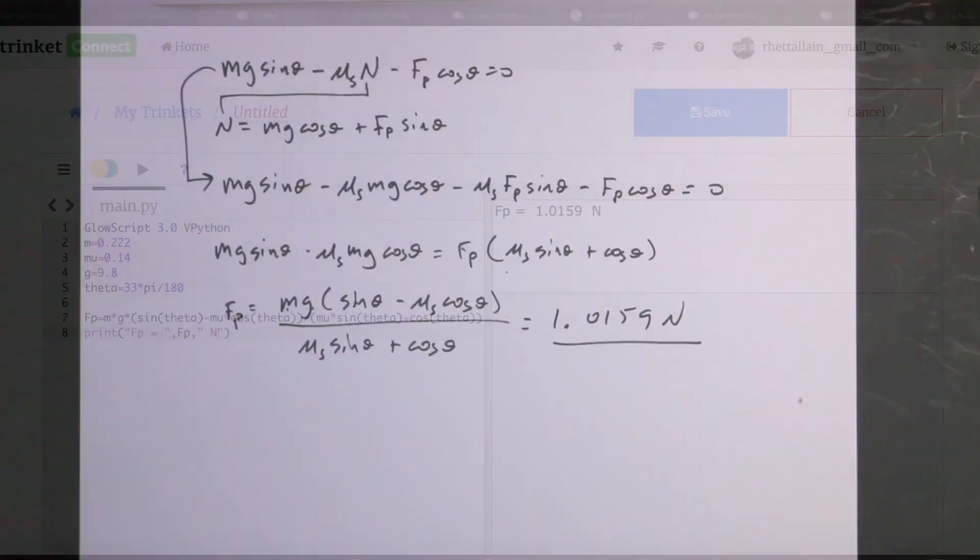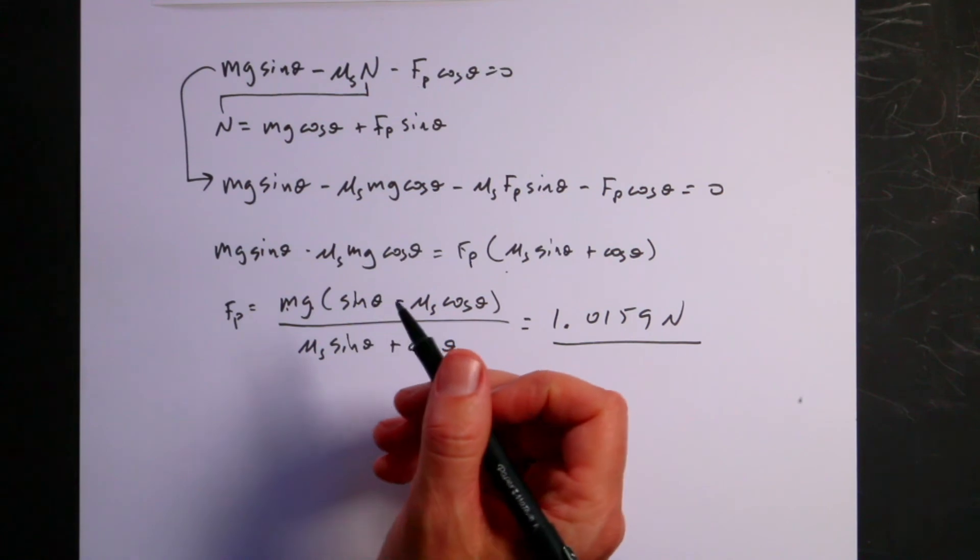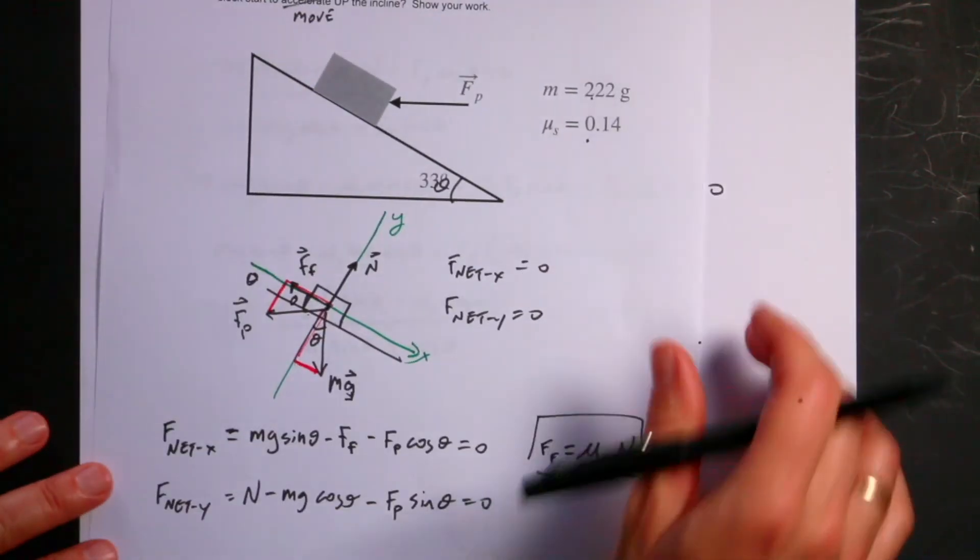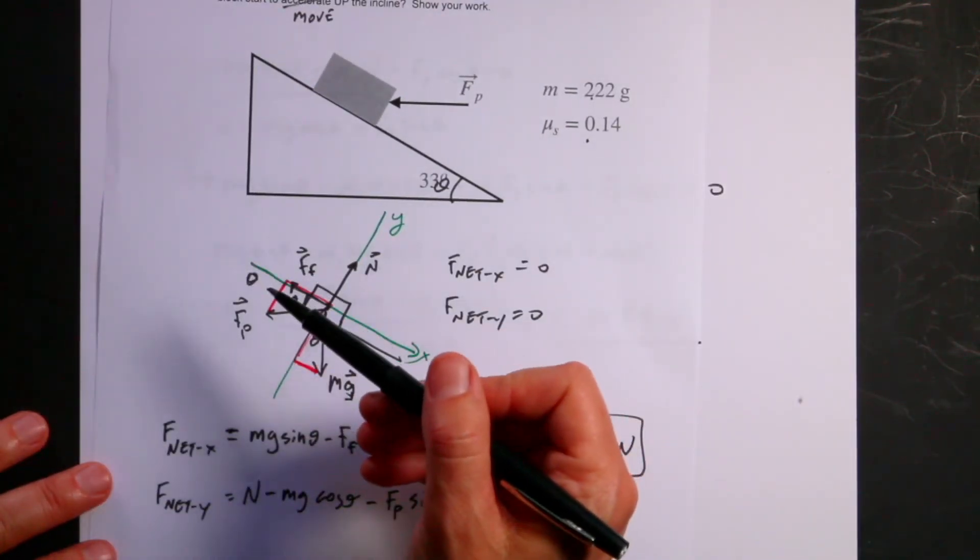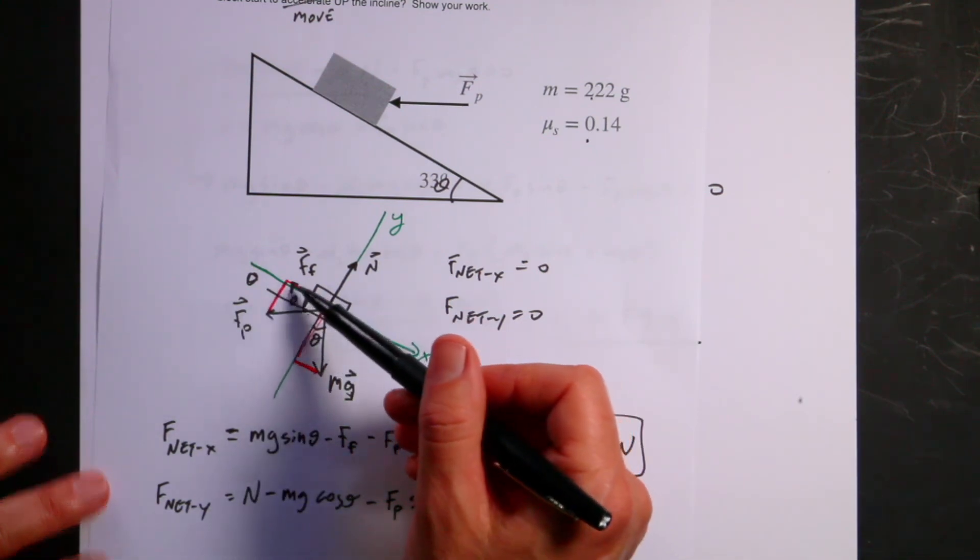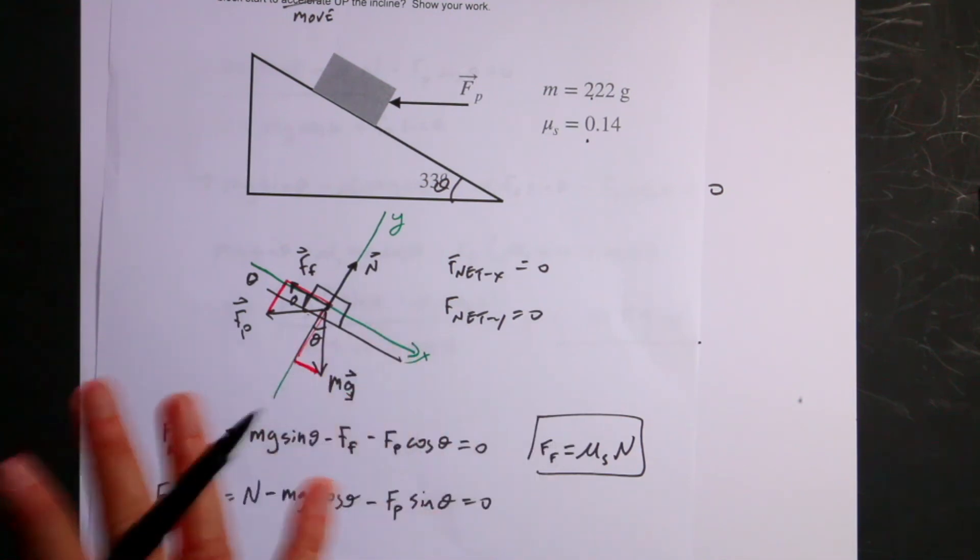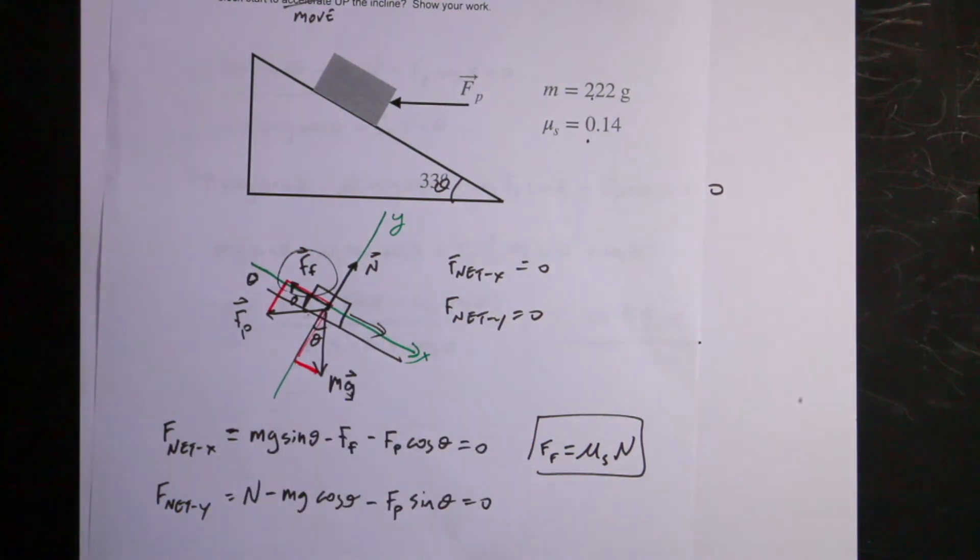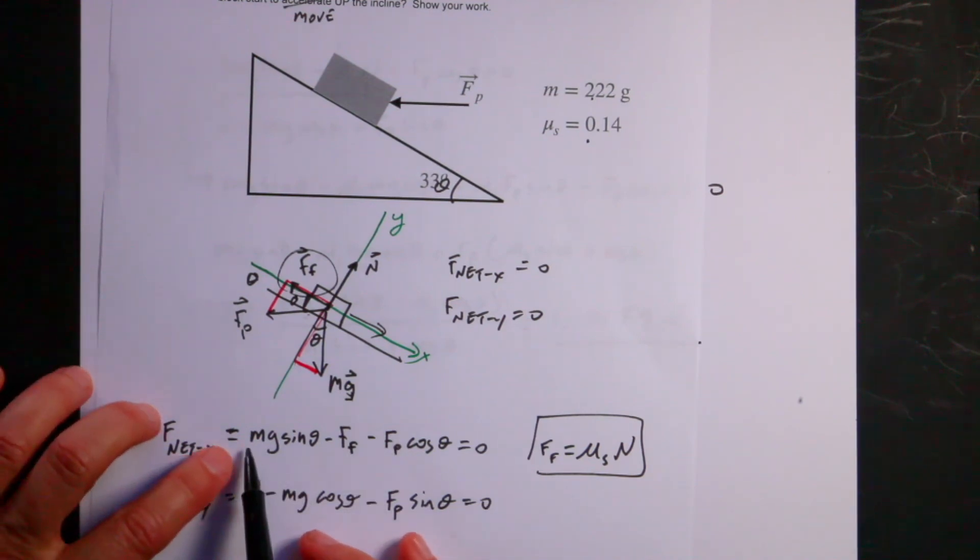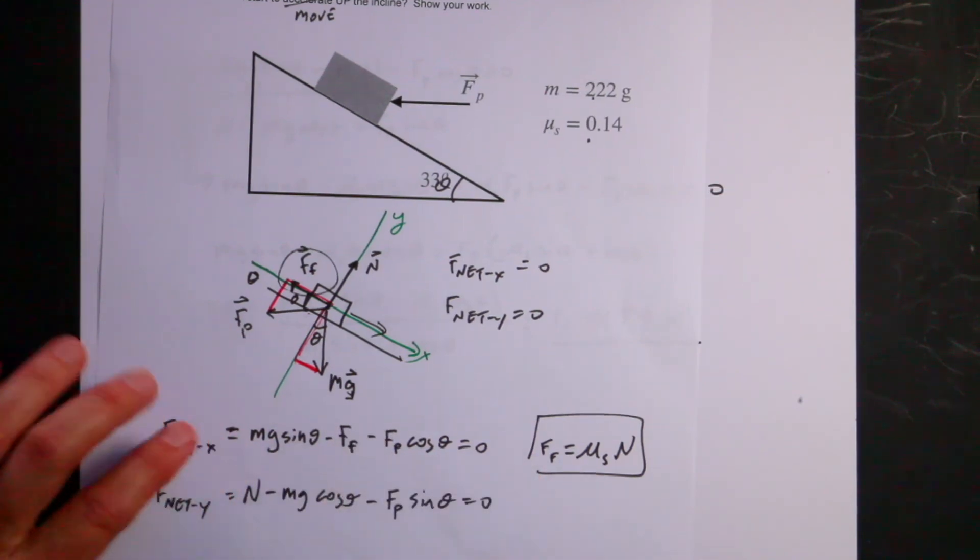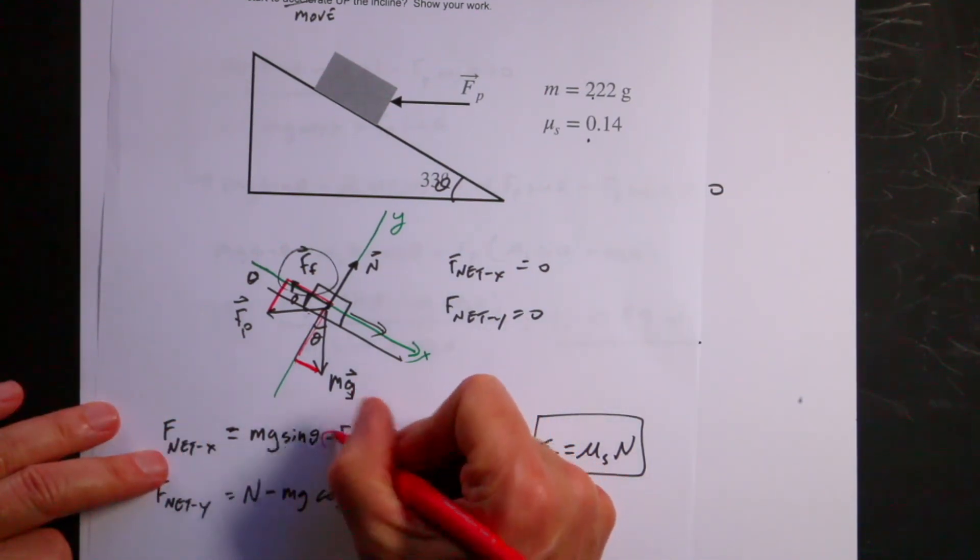So now the second part of the question said, what if I want to make the block slide up the plane? So if I want to push this block up the plane and to get it moving, I have to push harder. And so what's going to happen is this static friction force wants to oppose the relative change in motion, so that means this friction force is going to be pushing this way now.